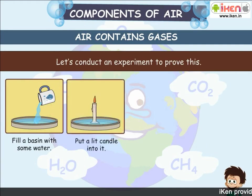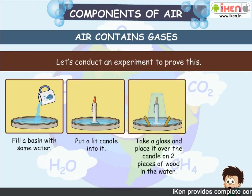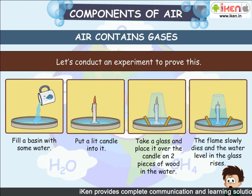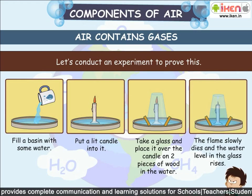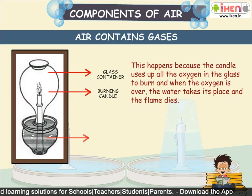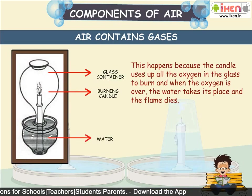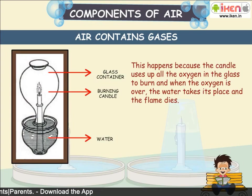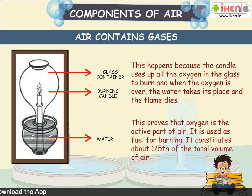Fill a basin with some water. Put a lit candle into it. Take a glass and place it over the candle on two pieces of wood in the water. The flame slowly dies and the water level in the glass rises. This happens because the candle uses up all the oxygen in the glass to burn. When the oxygen is over, the water takes its place and the flame dies. This proves that oxygen is the active part of air. It is used as fuel for burning and constitutes about one-fifth of the total volume of air.